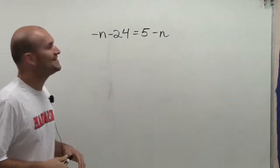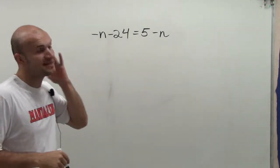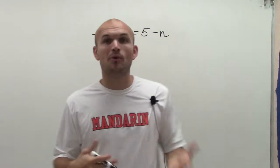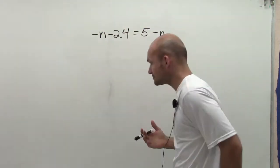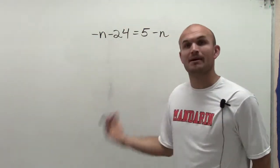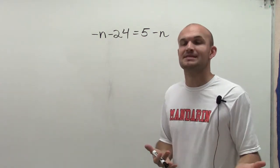Welcome. So here I have negative n minus 24 equals 5 minus n. And the important part about this problem is that I need to isolate my variable and get my variables to the same side.